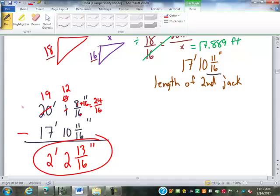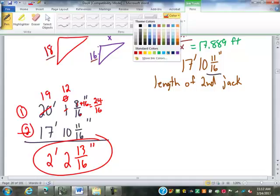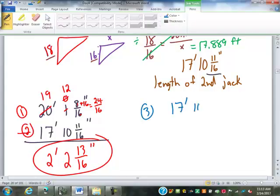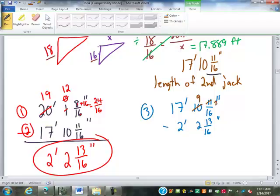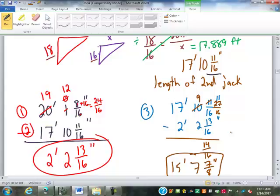So what that means is, you've got this is the longest one. This is the first one. This is the second one. To get the third one, seventeen, ten, eleven sixteenths, minus two, two, thirteen. Now there's going to be some borrowing involved again. This is going to be nine. This is going to be twenty-seven. Sixteen plus eleven is twenty-seven. We subtract fourteen sixteenths, otherwise known as seven-eighths. Ten minus two is seven, and fifteen. Now notice I wrote the fourteen sixteenths there, because when I go to do the next step, I'm going to put it back as fourteen sixteenths so I can subtract these here. So you can find the length of all those jacks down to where I get until it's too short to be useful anymore.